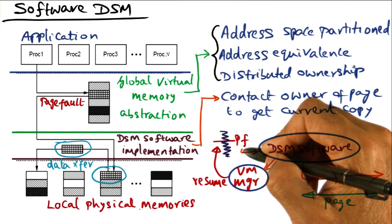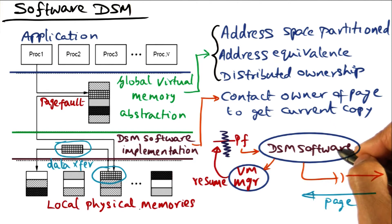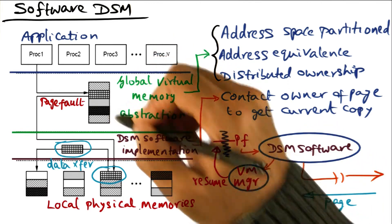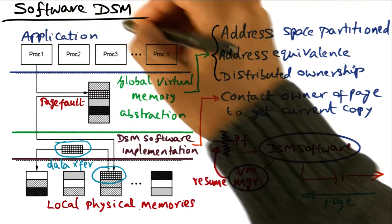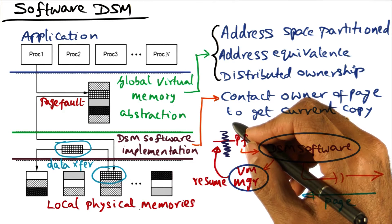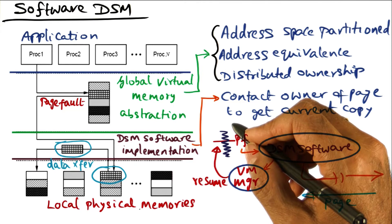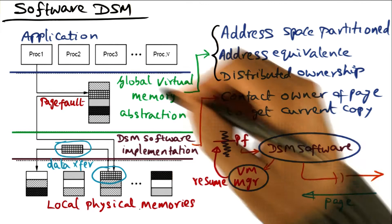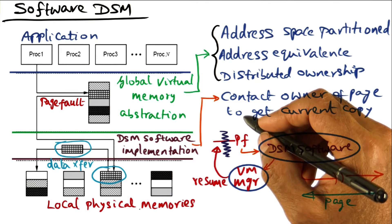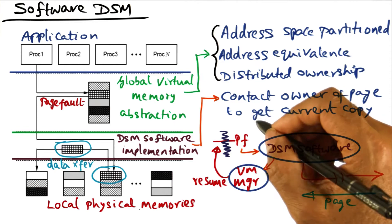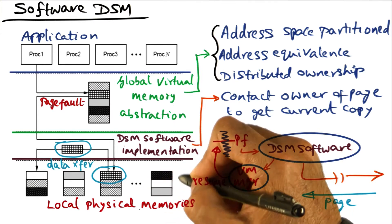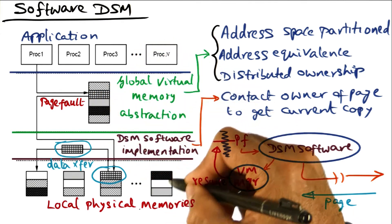This is the way coherence is maintained by the DSM software — as a cooperation between DSM software and the VM manager — and coherence maintenance happens at the level of individual pages. Early examples of systems that built software DSM include IVY from Yale, Clouds from Georgia Tech, Mirage from UPenn, and Munin from Rice. All of these distributed shared memory systems used coherence maintenance at the granularity of an individual page, and they used a protocol often referred to as a single writer protocol. There is a directory associated with the portion of the virtual memory space managed by each node.